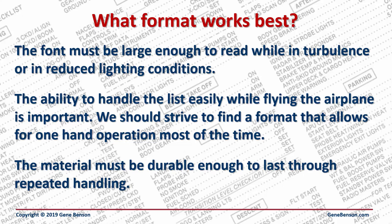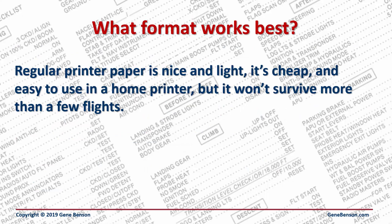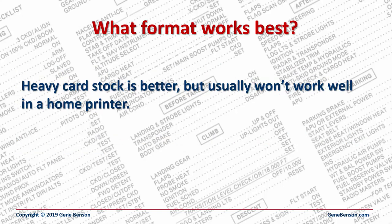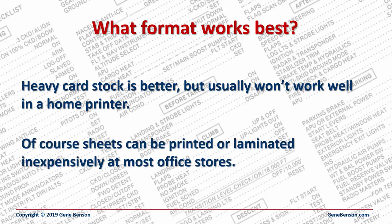The material must be durable enough to last through repeated handling. Regular printer paper is nice and light — it's cheap and easy to use in a home printer, but it won't survive more than a few flights. Thin cardstock is more durable and can usually be used in a home printer. Heavy cardstock is better but usually won't work well in a home printer. Of course, sheets can be printed or laminated inexpensively at most office supply stores. A big consideration is where the checklist will be stored in the airplane. Something that will fit in a side pocket is usually preferable, but other creative solutions can sometimes be found.